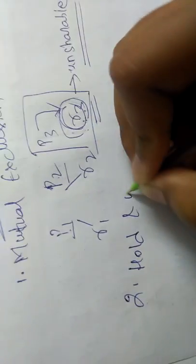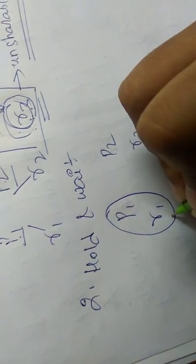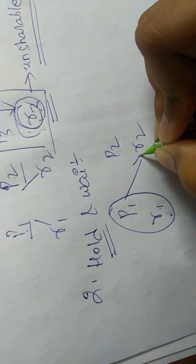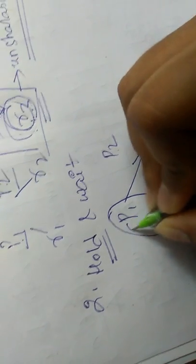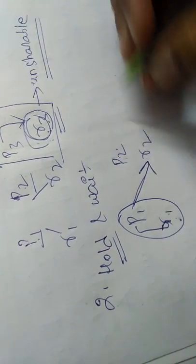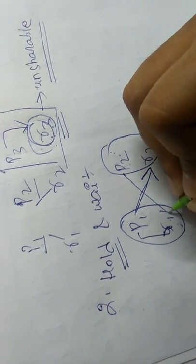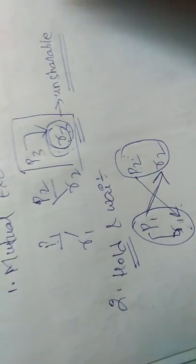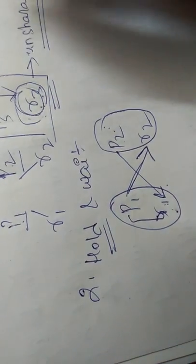The second solution to prevent deadlock is hold and wait. If a process is already holding a resource, it cannot request another resource simultaneously. For example, if process one is holding resource one, it cannot request resource two at the same time. Similarly, process two holding resource two cannot simultaneously request resource one.